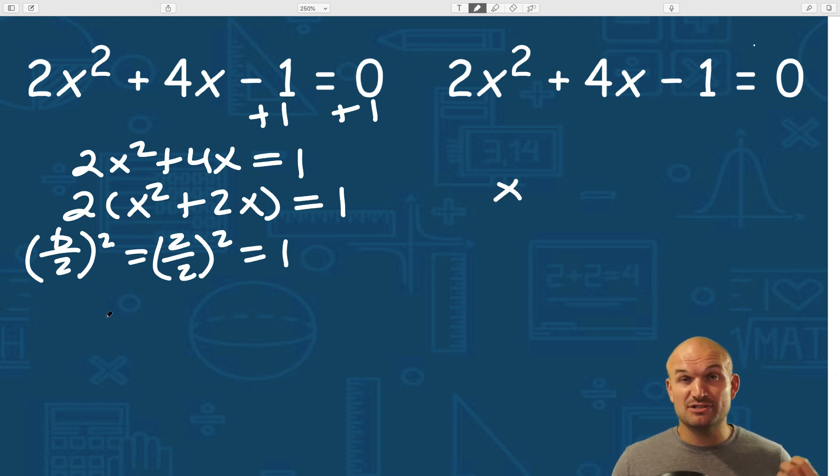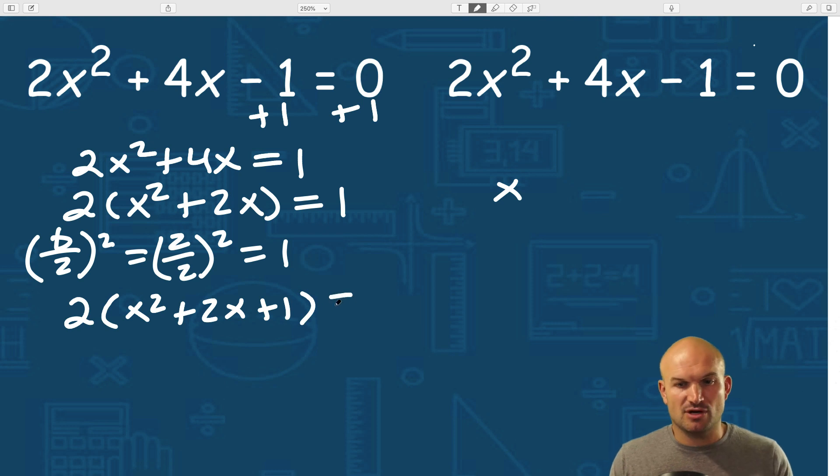So now with this one, that is going to be the value that completes the square. So what we can do is we're going to need to add this one inside of this parentheses. So I'll have a 2(x² + 2x + 1). Now again, remember whatever we do on one side, we have to do on the other side. So if I add a one to the left side, I have to add a one to the right side. But we have to be very careful because on this left side, we're not really adding one.